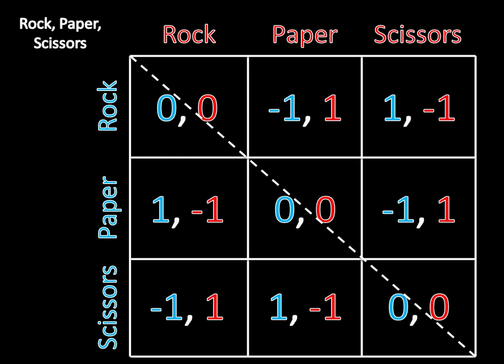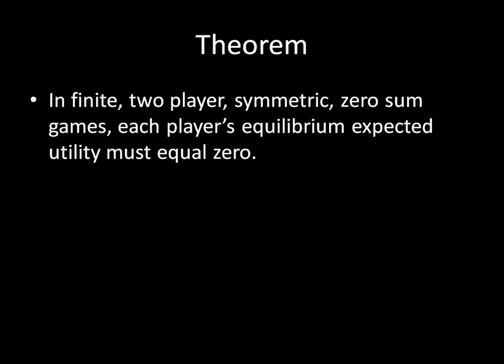So that's what a symmetric game looks like, and once we combine these two things together, we get a really neat theorem: in finite, two-player, symmetric, zero-sum games, each player's equilibrium expected utility must equal zero. We know what zero-sum games are, symmetric games, and two-player games. 'Finite' just means each player has a finite number of pure strategies. The neat part is that we can give a very precise prediction — the expected utility for both players in Nash equilibrium must be zero; it has to be zero, otherwise we don't have a Nash equilibrium.